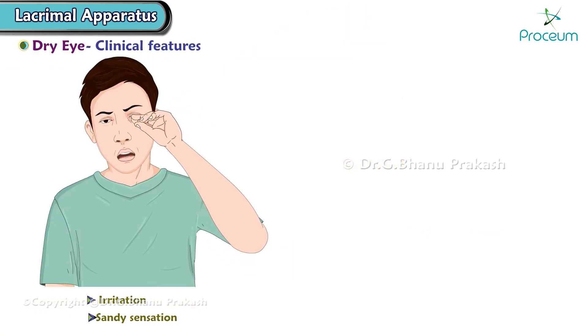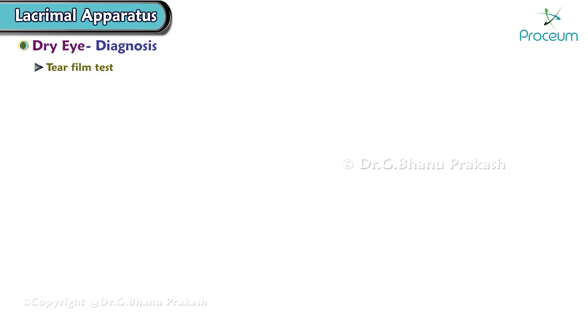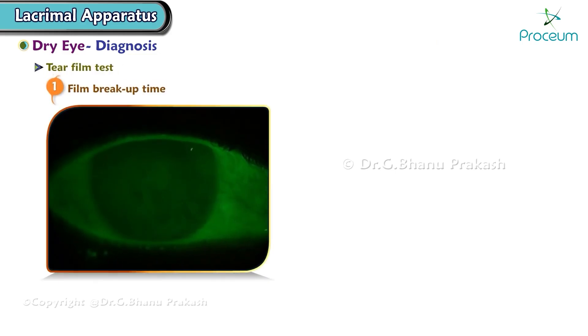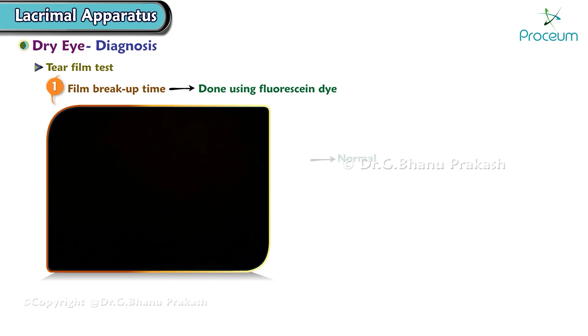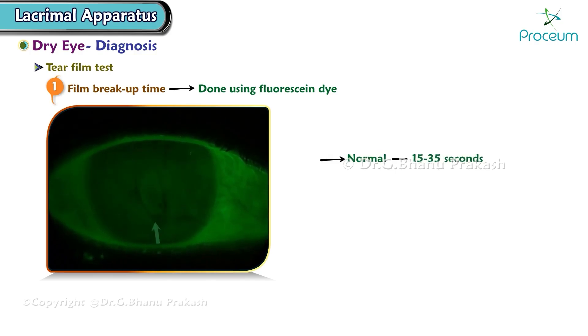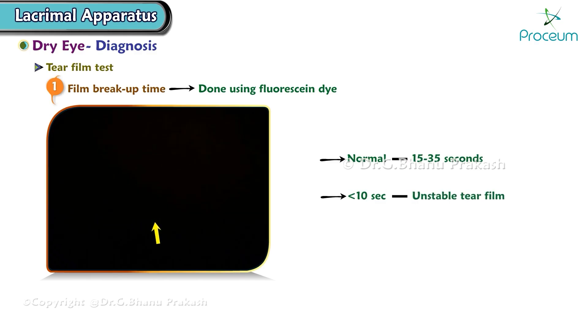Clinical features of dry eye are irritation, sandy sensation, and stringy mucus. Diagnosis via tear film tests. 1. Tear film breakup time is done using fluorescein dye. Normal is 15-35 seconds; less than 10 seconds depicts an unstable tear film.